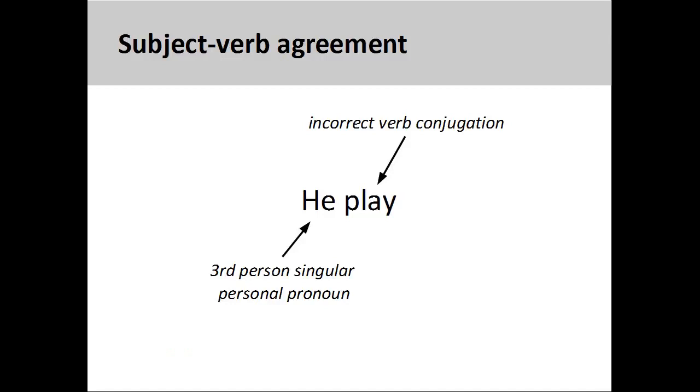When conjugating verbs, it is important to maintain agreement between the subject and the verb. That is to say, the verb must agree with the subject both in number and person.